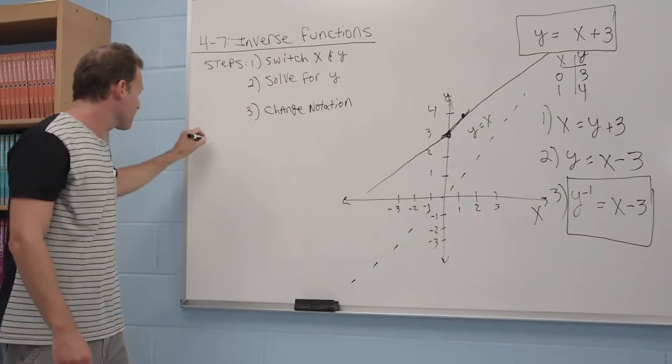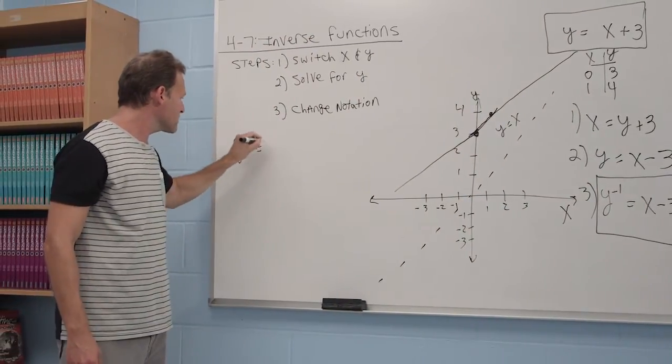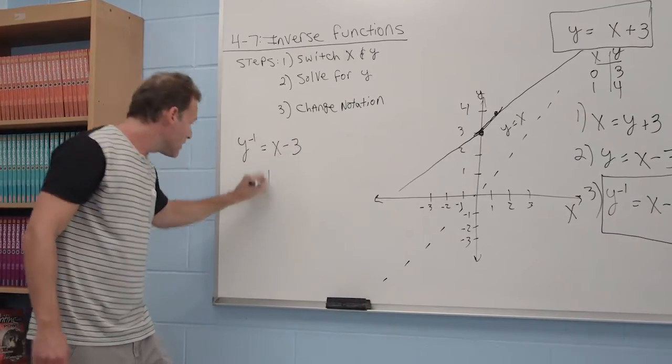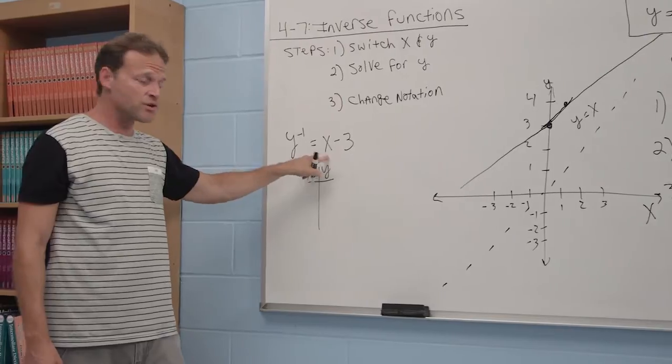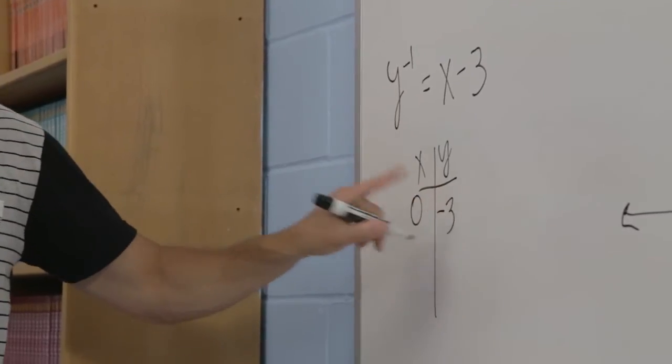Let's plot that. We have y inverse is equal to x minus 3. Set up a little table. When x is equal to 0, y is equal to negative 3.